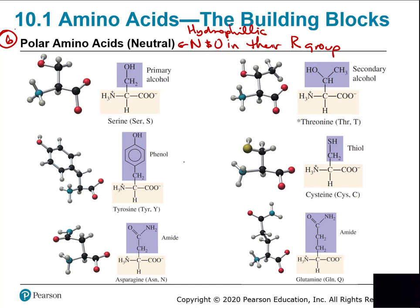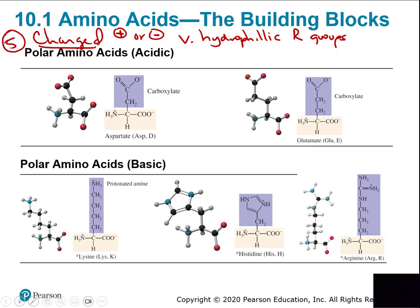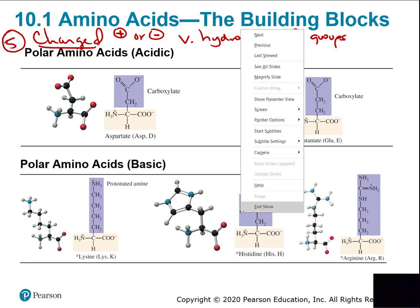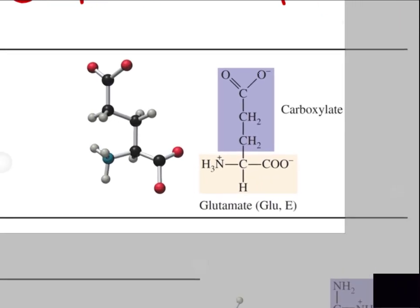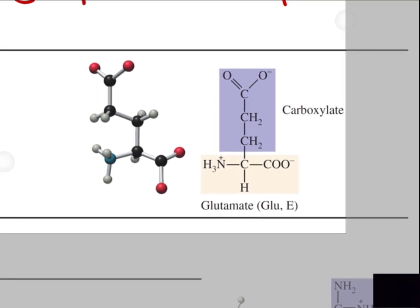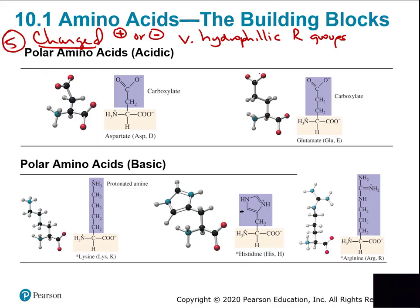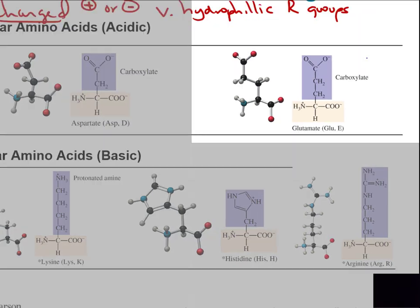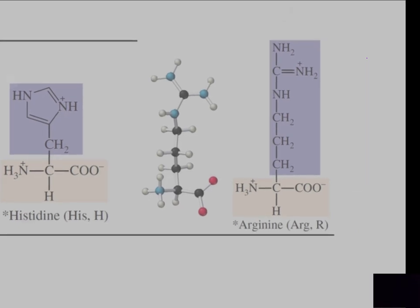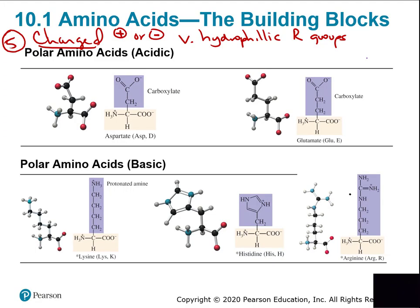The last five amino acids are charged — ionic. These are aspartate, glutamate, lysine, histidine, and arginine. For example, aspartate has an oxygen on the end with a negative charge — acting like an ionic compound, making it very hydrophilic. Arginine has three nitrogens, one with a charge — also very hydrophilic. These charged amino acids do not interact well with non-polar amino acids, like oil and water — they completely try to separate.